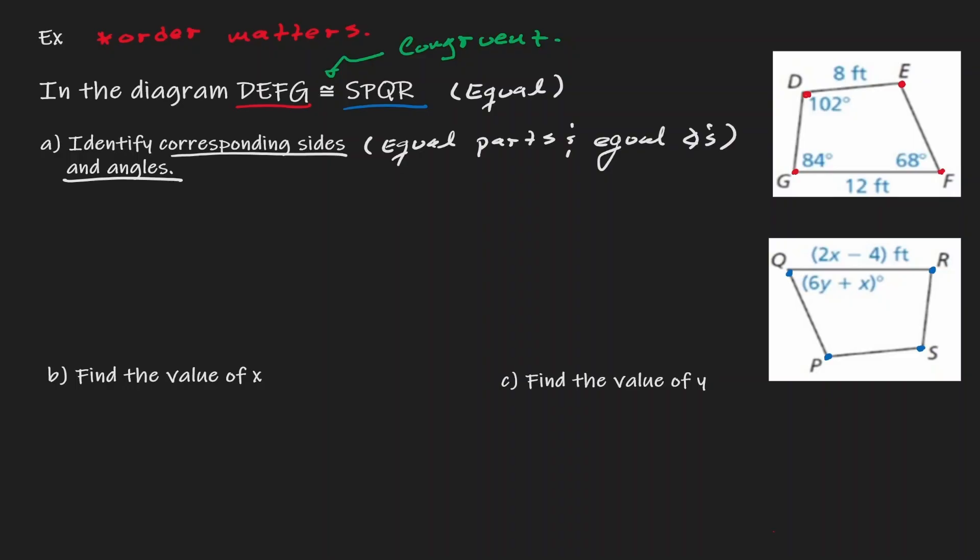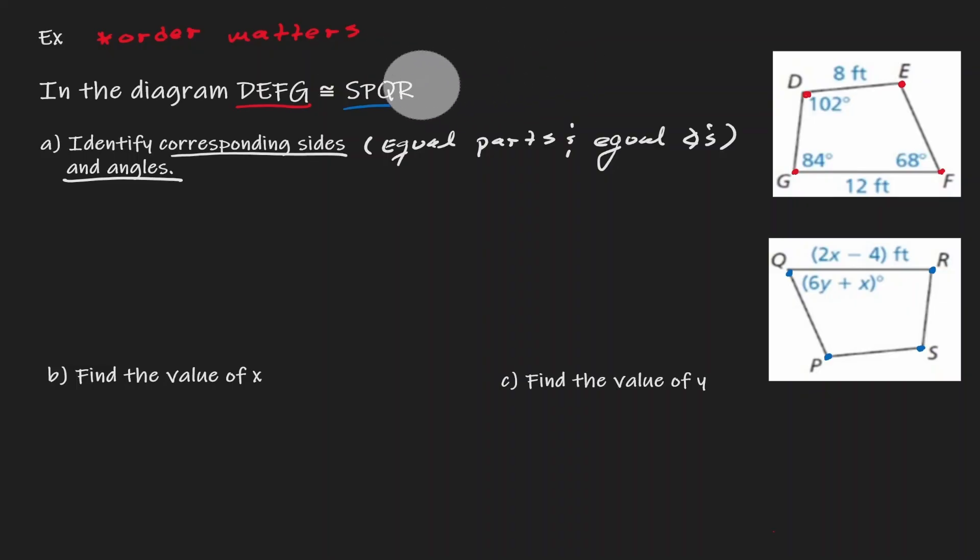How are we going to be able to identify which sides are congruent and which angles are congruent? For that, we have to take a look at how we are stating the congruent statement. The way that we have stated it is that DEFG is congruent to SPQR.